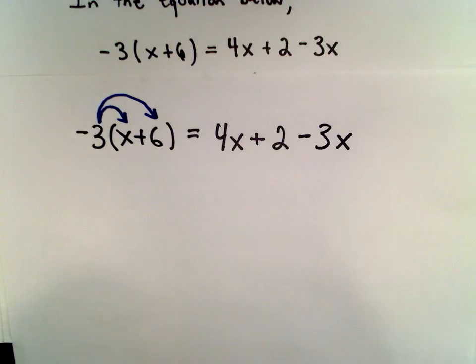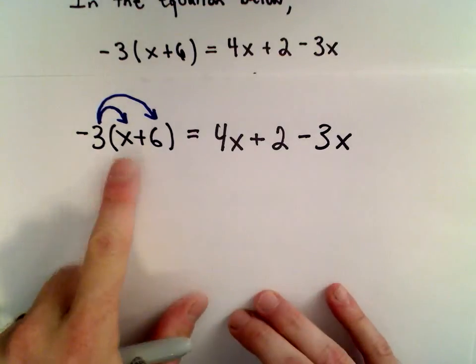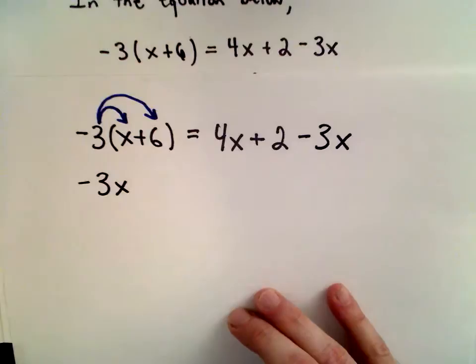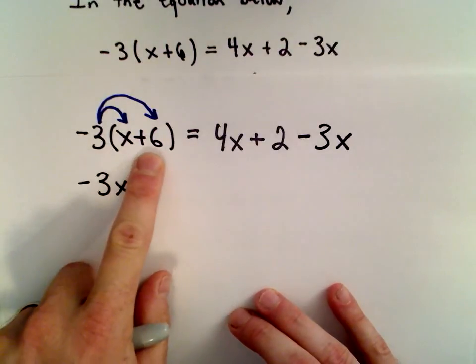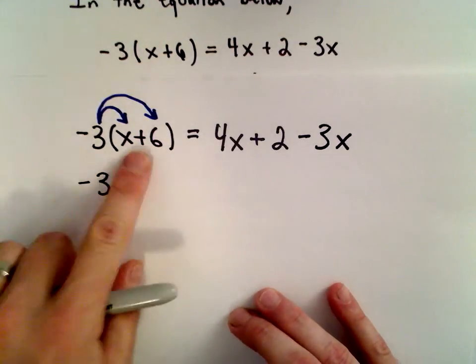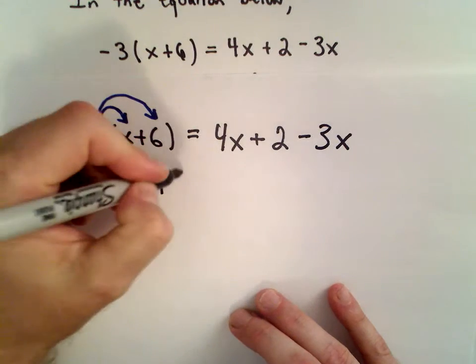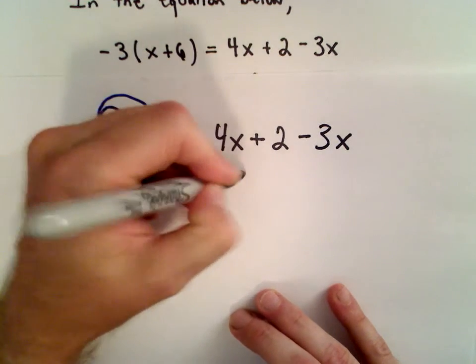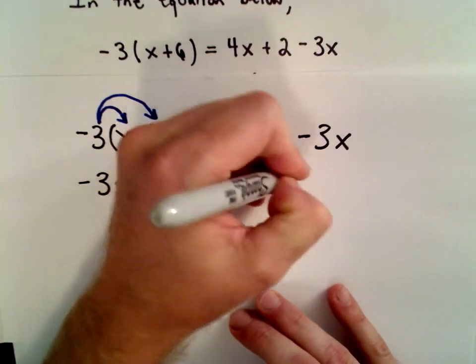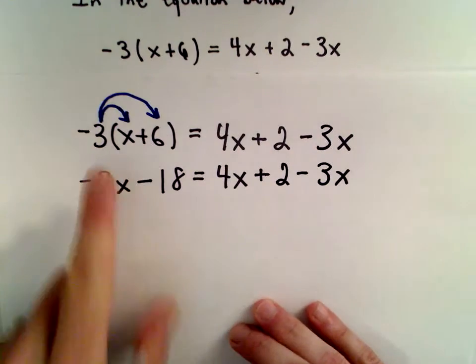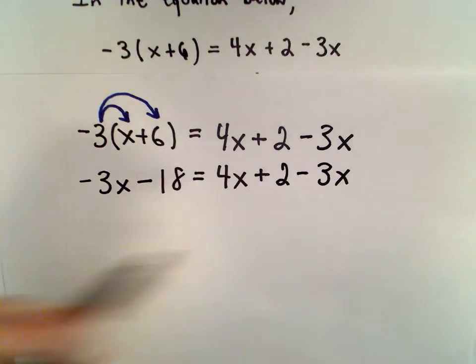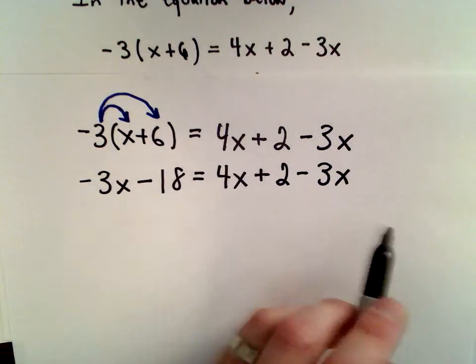In this case, I take negative 3 and multiply it by x. That's negative 3x. Negative 3 multiplied by positive 6 - well, a negative times a positive is a negative, and 3 times 6 is 18, so negative 18. This is good because once there's no parentheses left, you're free to start combining like terms and moving things around. That's what I want to be able to do.